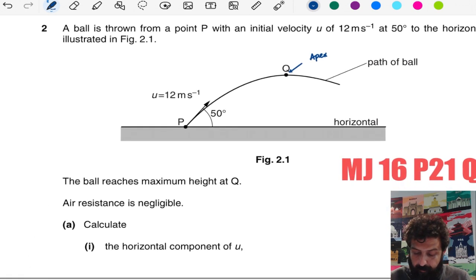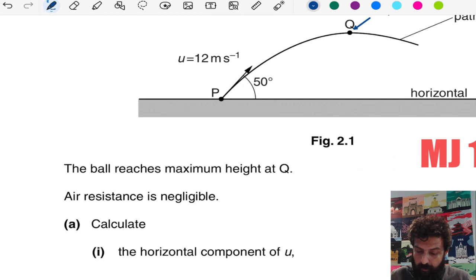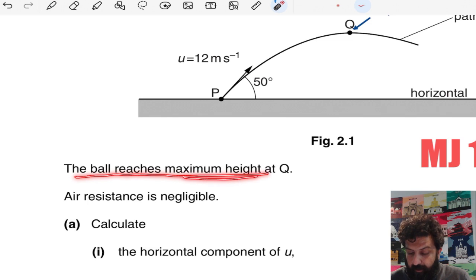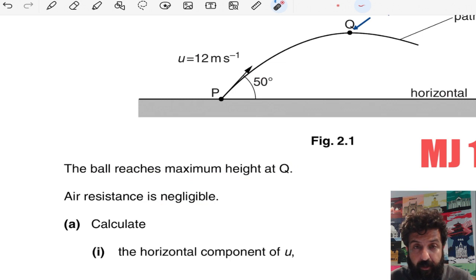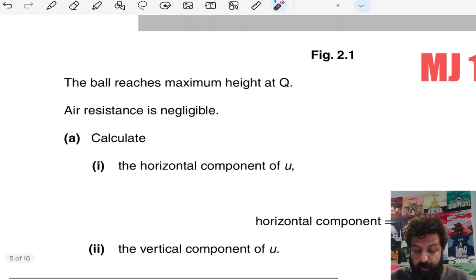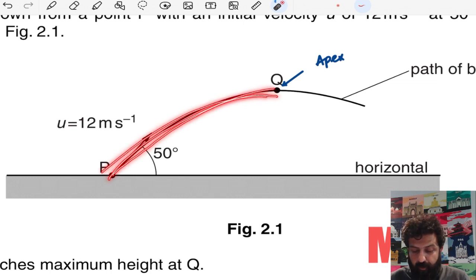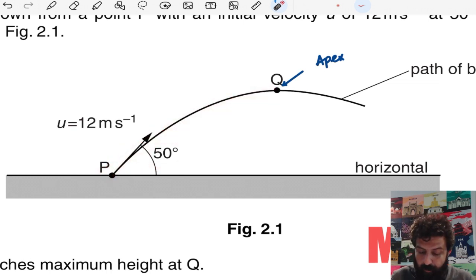The question states the ball reaches maximum height and air resistance is negligible. Because air resistance is negligible, we can apply uniform acceleration or deceleration SUVAT equations. Remember, our question always starts from the initial point, and we will discuss the horizontal and vertical components.